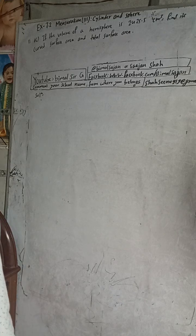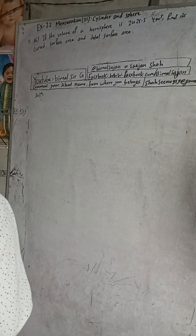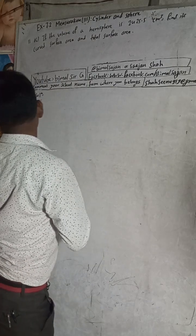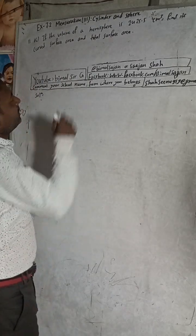Let's start the video without wasting more time. If the volume of hemisphere is 2425.5 cm³, find curved surface area and total surface area. The volume of hemisphere is given here.